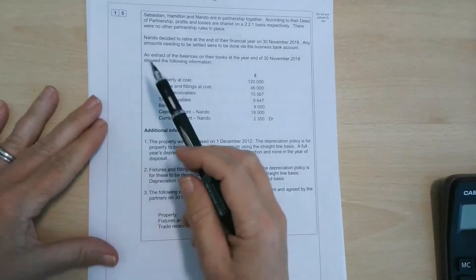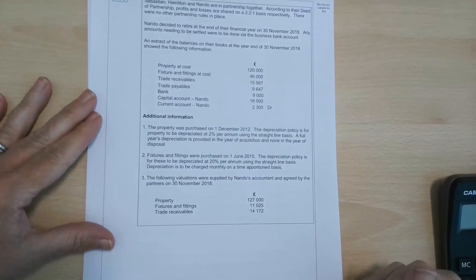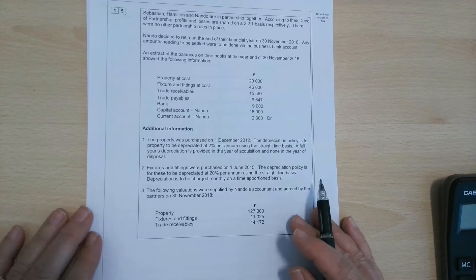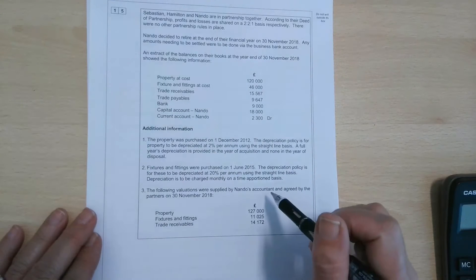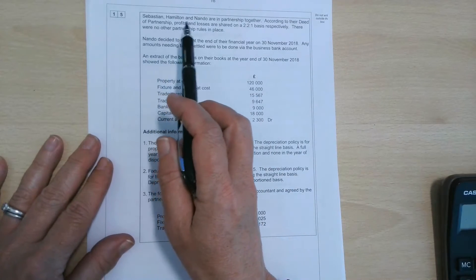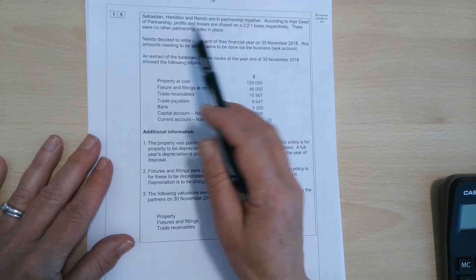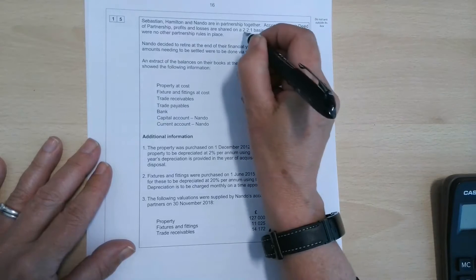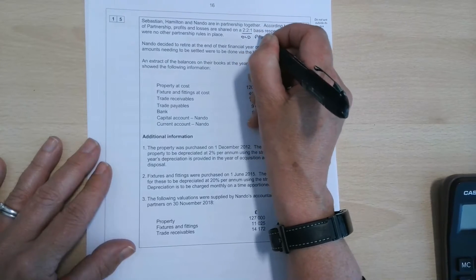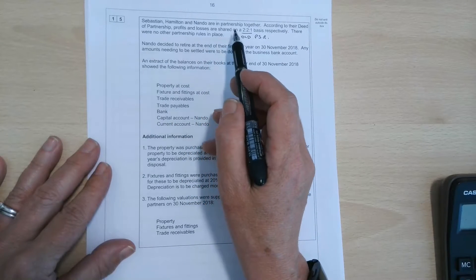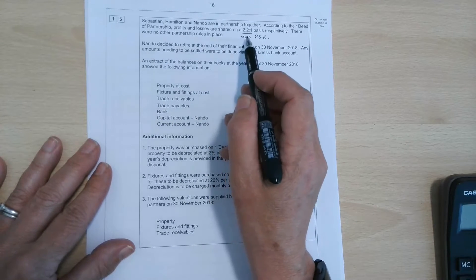I had a request to go through this partnership question that came from the 2019 Paper 1 exam. So pretty classic partnership question with retirement of a partner and some revaluation going on. I don't think there's goodwill actually with this one, but let's just have a look. So Sebastian, Hamilton and Nando are in partnership together. According to their deed of partnership, profits and losses are shared on a two to two to one basis respectively. So that's the old profit sharing ratio. There were no other partnership rules in place.